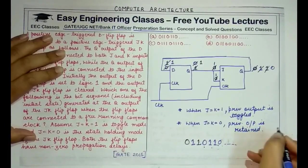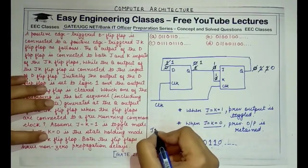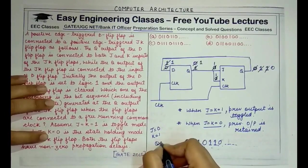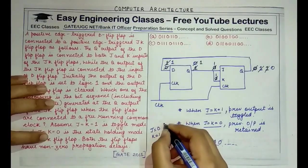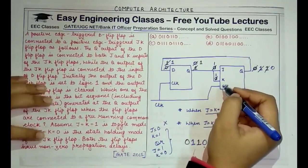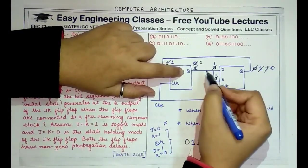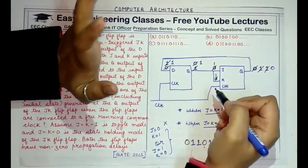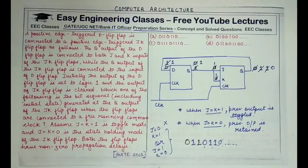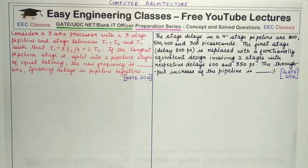We only consider the conditions J=K (both equal) and not J=0,K=1 or J=1,K=0, because the output of the D flip-flop goes into both J and K, so they will always have the same value — either both 0 or both 1. Therefore, the correct answer is option A.